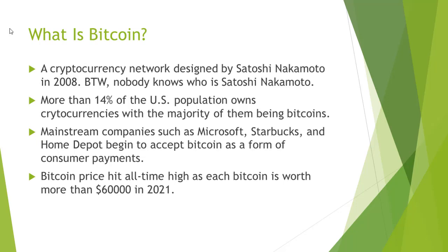What is a Bitcoin? A Bitcoin is a cryptocurrency network designed by Satoshi Nakamoto in 2008. Nakamoto is a mysterious character or group, because nobody knows who Nakamoto really is. But it doesn't matter, because Bitcoin is generating a strong impact on our daily life. In 2021, more than 14% of the US population owns some types of cryptocurrencies, and the majority is Bitcoins.